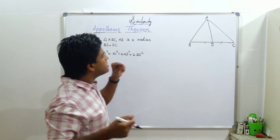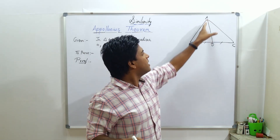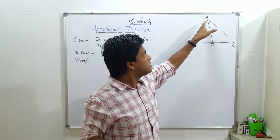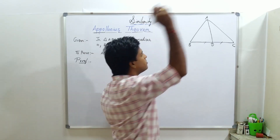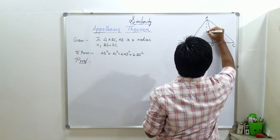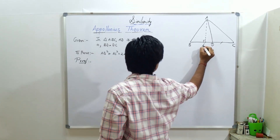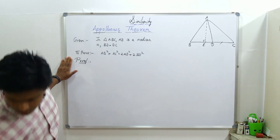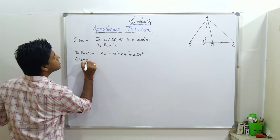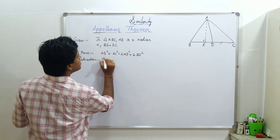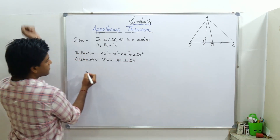That means there must be a height. There must be a height here, and then only we will get this height, and we will get this side on the LHS. So what I will do is draw a perpendicular and mark it as E. So we need to have a construction. Construction: draw AE perpendicular to BD.